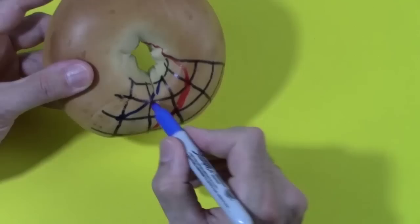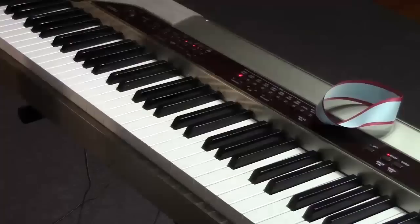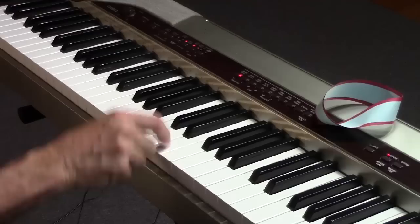But this toroid space doesn't quite capture the musical idea we need. The problem is that on the torus, C-E and E-C are two different points. But the order X-Y versus Y-X shouldn't matter because C-E and E-C sound the same.